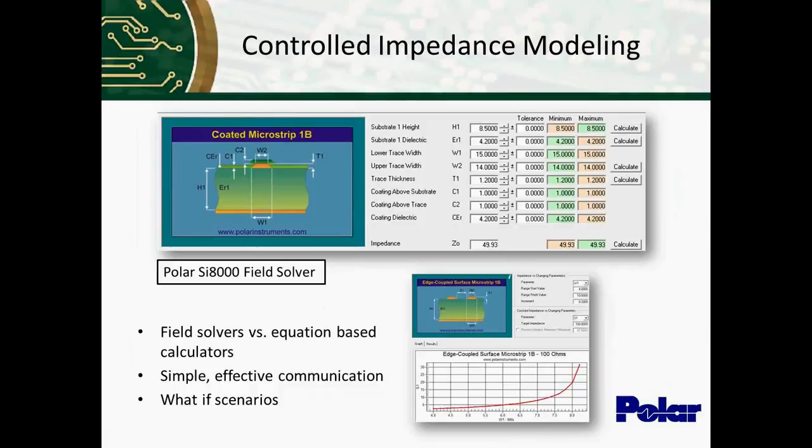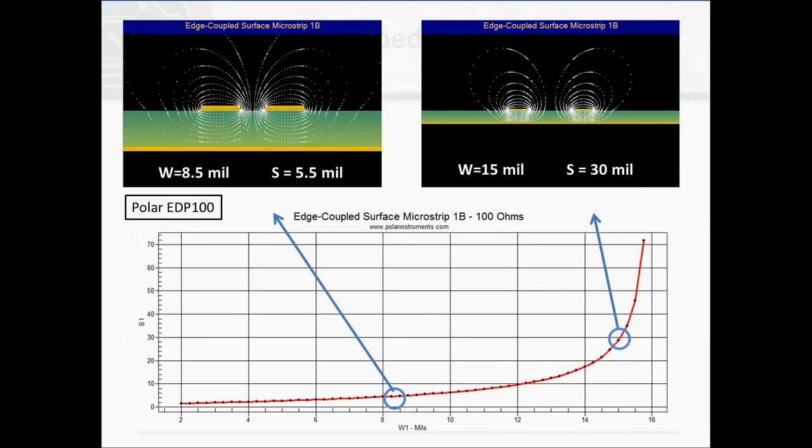The next aspect, which can be really nice when you're dealing with controlled impedance structures, is what-if scenarios. So, for example, if you know that you're trying to design a 100-ohm differential microstrip, you can use a field solver to help you with that. But you may want to play around with the line widths and the spacings to maintain that 100-ohms. So what I've done is I've created this graph on the bottom in SI-8000, which shows all the various possibilities for a 100-ohm microstrip structure. And I've just blown up a couple pictures here of 8.5 mil width or 15 mil width, and you can see how the different fields are propagated in those cases.